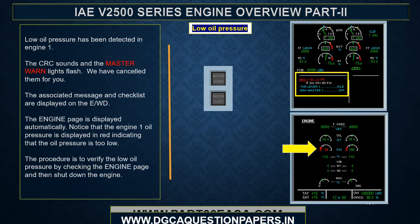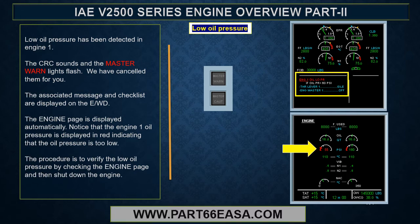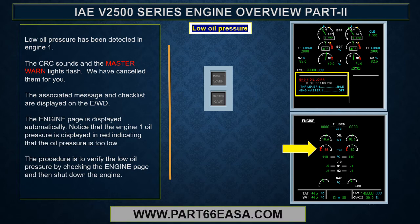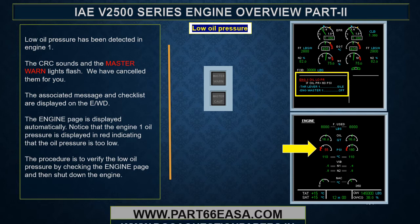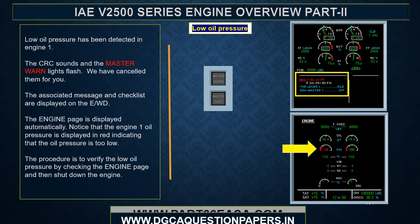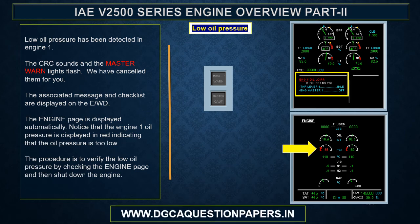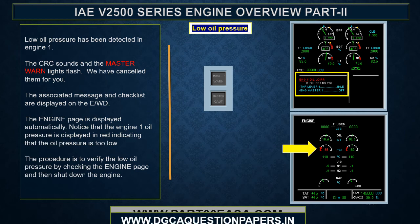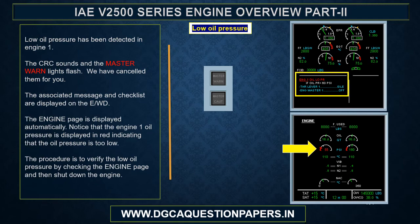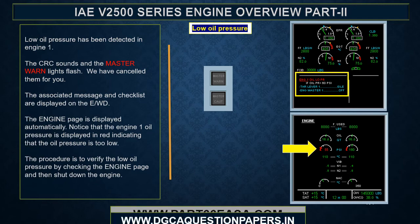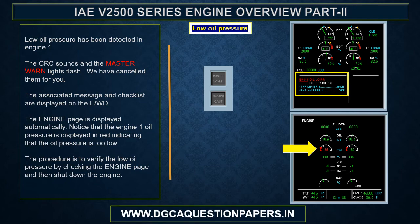Low oil pressure has been detected in engine 1. The CRC sounds and the master warning lights flash. The associated message and checklist are displayed on the EWD, and the engine page is displayed automatically. Notice that the engine 1 oil pressure is displayed in red, indicating the oil pressure is too low. The procedure is to verify low oil pressure by checking the engine page, then shut down the engine.